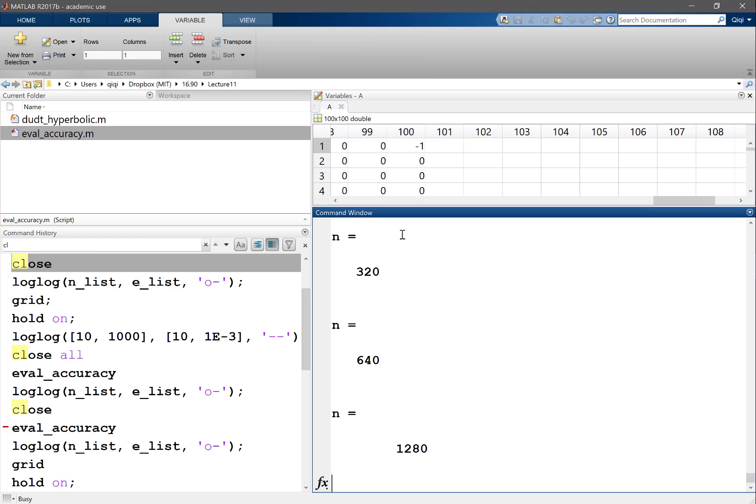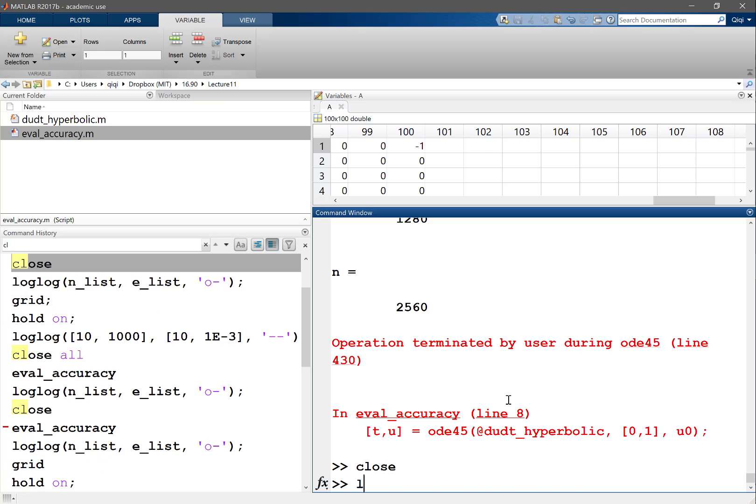I think it runs. Now it's doing more work. Remember, the stability region—or not stability region, the eigenvalues—are going to be proportional to 1 over Δx². Using ode45, it's giving a harder time to ode45. I'm not sure if this is going to finish in a reasonable time, so I'm just going to cut it.